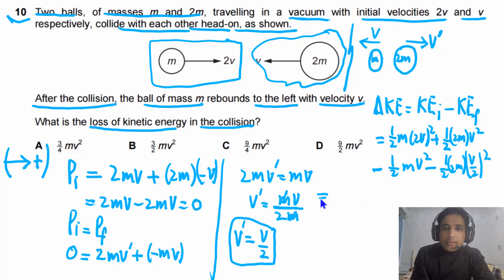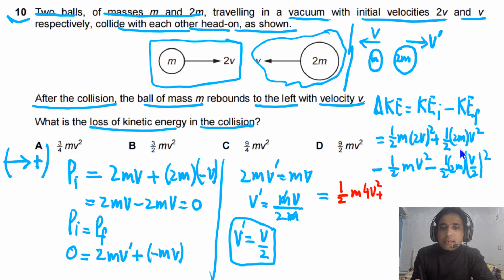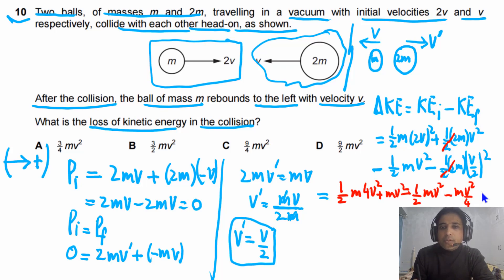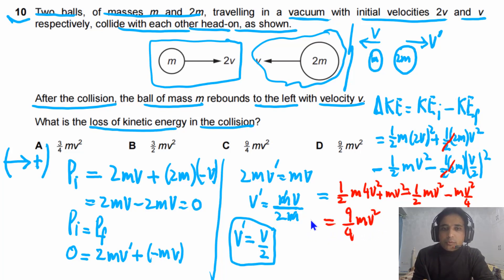Simplifying: one-half m times 4v² gives 2mv², and one-half times 2m times v² gives mv². For the final KE terms: one-half mv² and, canceling the 2s, mv² divided by 4. Combining all terms, our final answer is delta KE equals 9/4 mv². This is the loss in kinetic energy.